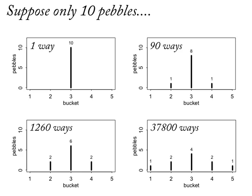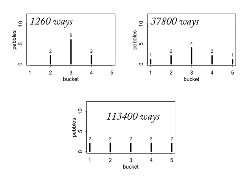We can make this flatter yet. Here I show a distribution where there are two pebbles in each bucket — the flattest, most distributed we can possibly get the pebbles — and we finally reach a maximum. The number of ways you can realize this distribution is 113,400 different ways. There is no other arrangement of pebbles which has more ways to be realized than this. This is a general principle of statistical inference: distributions which are flat can be realized in many more unique ways. This is why we bet on them. They have high entropy.